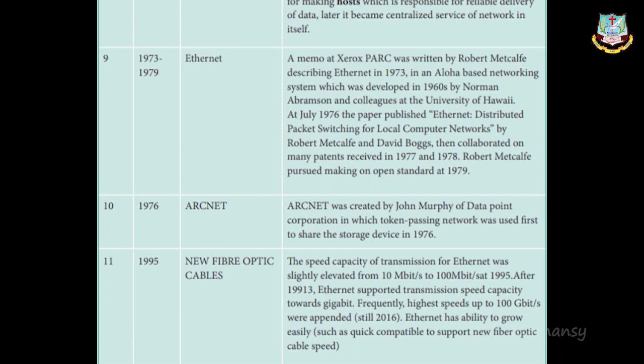New fiber optic cables: in 1995, the speed capacity of transmission for Ethernet was elevated from 10 Mbits per second to 100 Mbits per second. After this, Ethernet supported transmission speed towards gigabytes, with speeds up to 100 gigabits per second still in use in 2016. Ethernet has the ability to grow easily with quick compatibility to support new fiber optic cable speeds. Fiber optic cables, like what BSNL broadband is now upgrading to, speed up connections significantly.